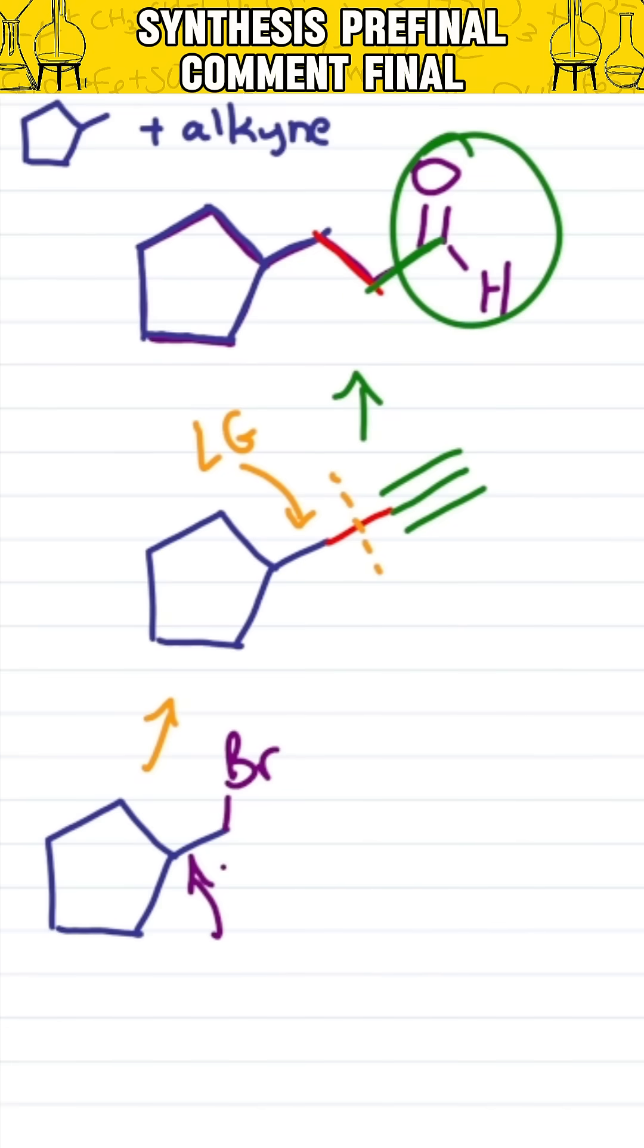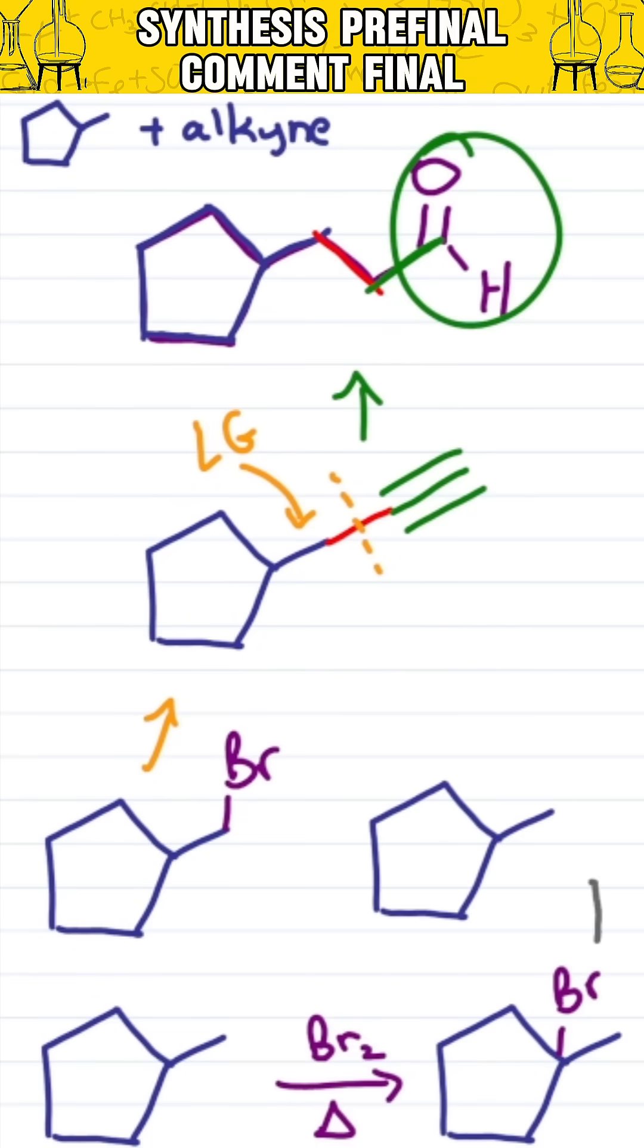So let's do a little bit of forward synthesis. I have my alkyl chain. Radical halogenation gives me a bromine at the most substituted position. Elimination with a big bulky base gives me a terminal alkene, the Hoffman rather than Zaitsev product, which allows me to do radical halogenation for an anti-Markovnikov bromine on the primary position. So let's go back and fill in our reagents.